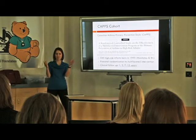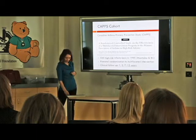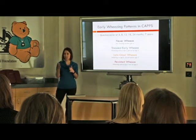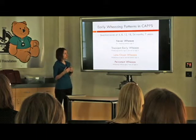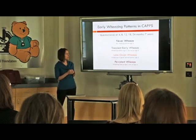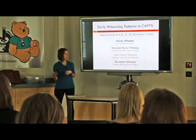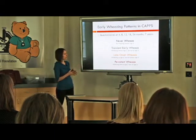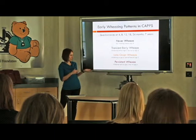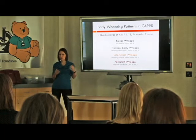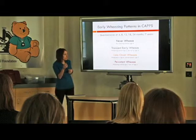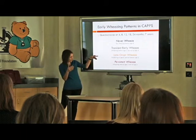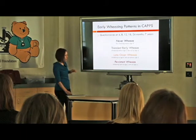For today we're interested in wheezing phenotypes. Clinical follow-ups were at 1, 2, 7, and 15 years, but questionnaires were completed more frequently — at 4, 8, 12, 18, and 24 months, and again at the 7-year follow-up — reporting on wheezing. We classified children into the four categories of never wheezing, transient early, late onset, and persistent wheezing — the four Tucson phenotypes. There's a slight difference in that the Tucson cohort used ages 3 and 6, while we had data at 2 and 7 years.